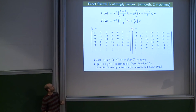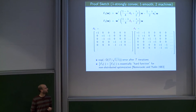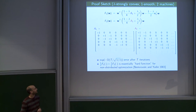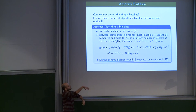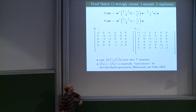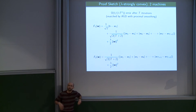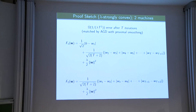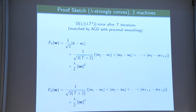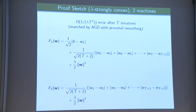The construction is the same but with different structural assumptions — machines can compute local Hessians and multiply them with things, and the lower bound still holds. For non-smooth functions, we create two functions with the same kind of interlocking structure but with absolute values instead of quadratics. We get a 1/(lambda t^2) lower bound, which is matched if you do the simple baseline with accelerated gradient descent and proximal smoothing.